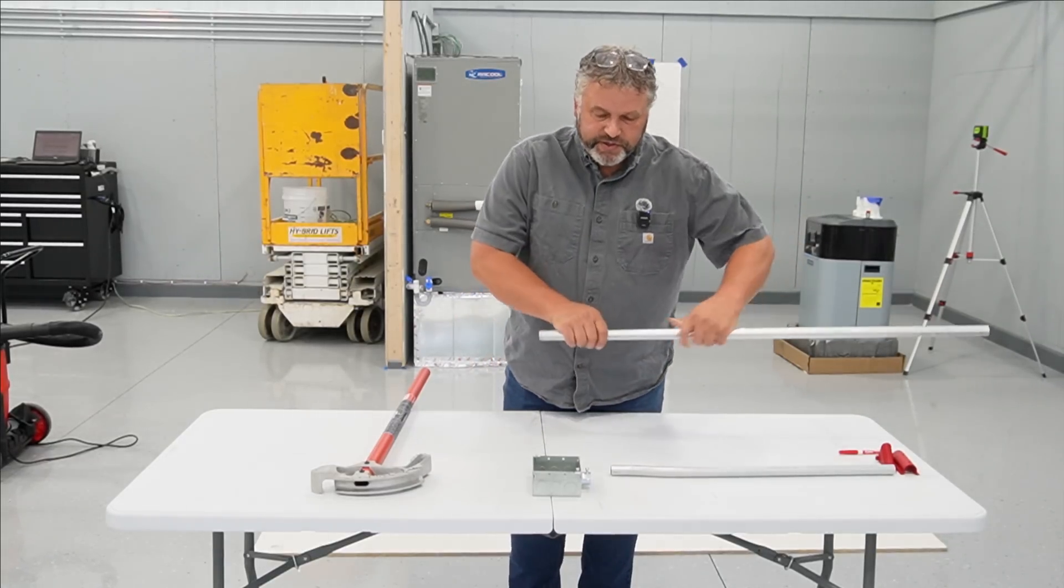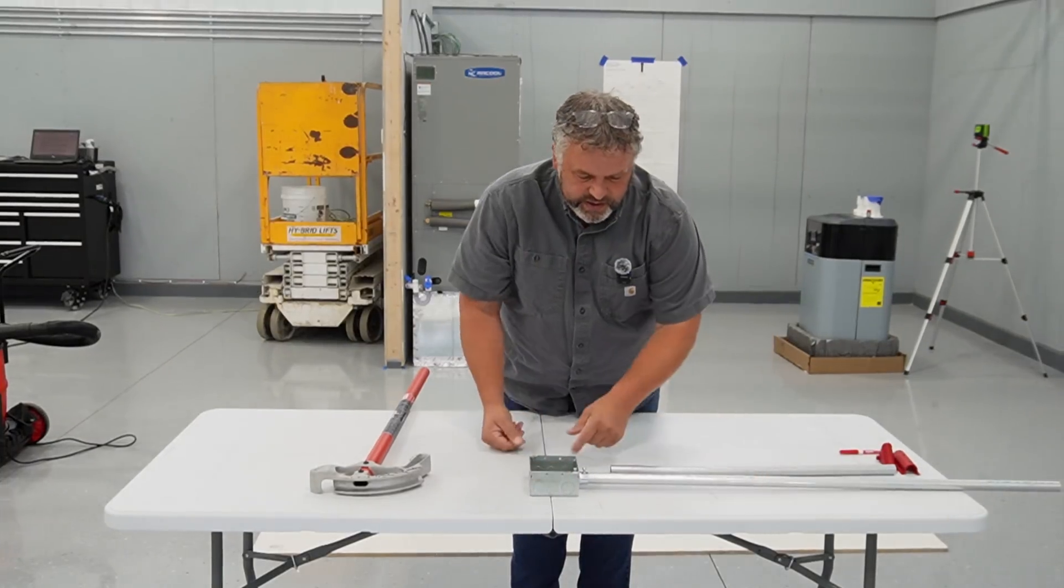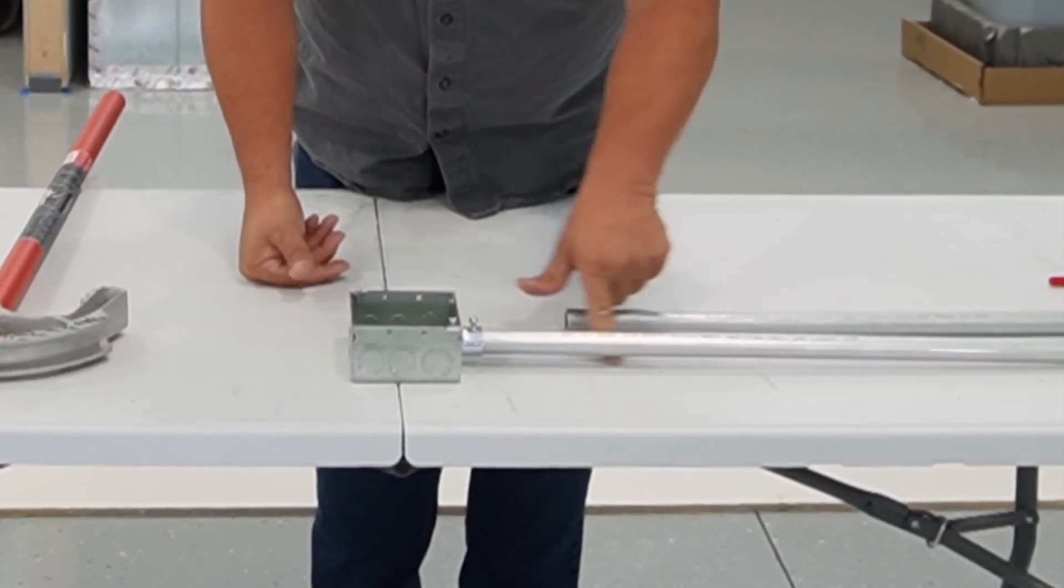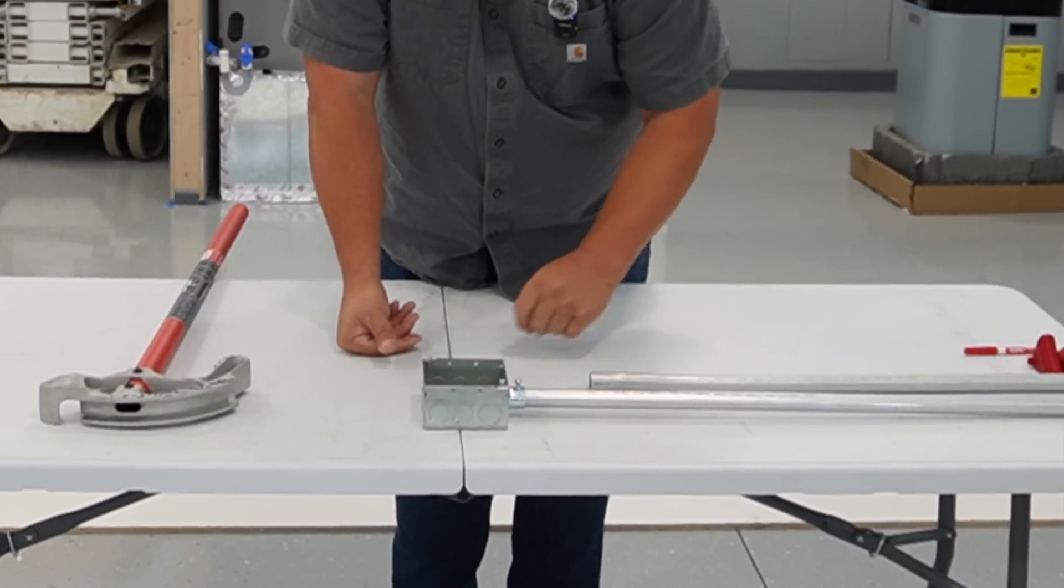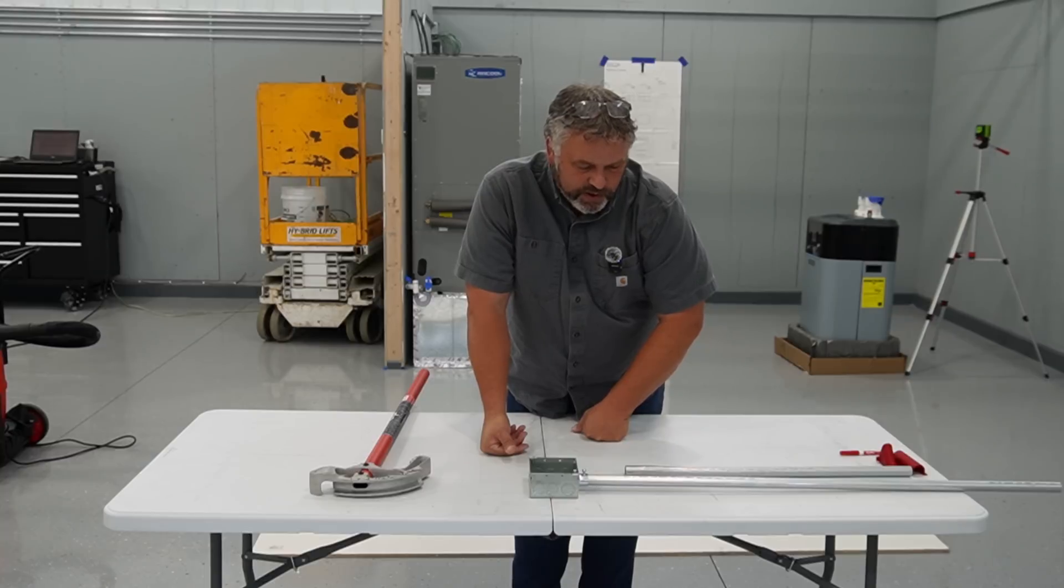So if the conduit was not made to have a box offset, you'd see that as it enters the box it has this gap. That gap is not great for both fastening the conduit down to the wall or whatever surface.